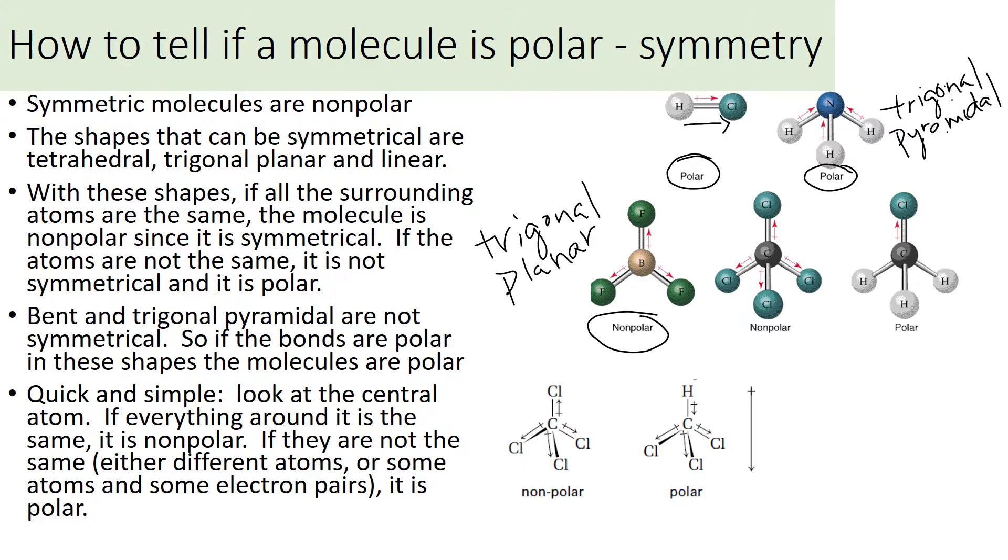Same with the carbon tetrachloride. You've got the four chlorines around the carbon. They're all pulling the same amount. And so they cancel each other out, and that one is nonpolar. But imagine if three of these were hydrogens instead. Now they are not all the same. So the chlorine is the negative end here, where the hydrogens are the positive end. And so you have a polar molecule, not symmetrical, so it's polar.